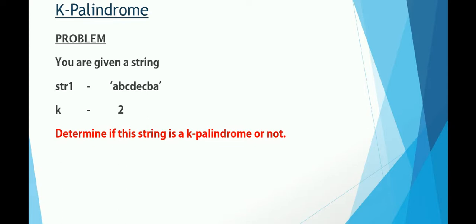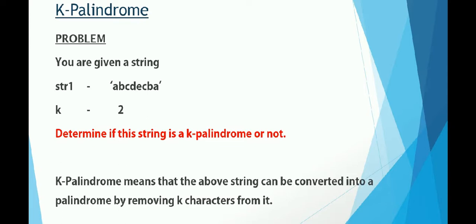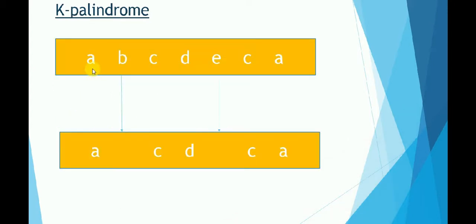A k-palindrome means that this string can be converted into a palindrome by removing k characters from it. So can string str1 be converted into a palindrome by removing k characters from it? That is the problem statement of k-palindrome. If we take the string 'abcdecba' and remove 'b' and 'e', we get a palindrome. So the answer is true for our problem.